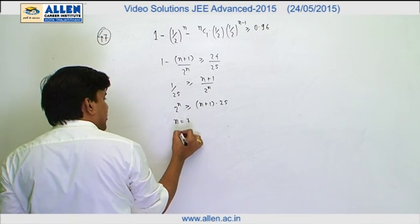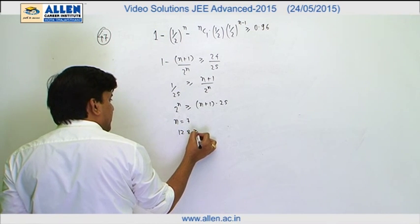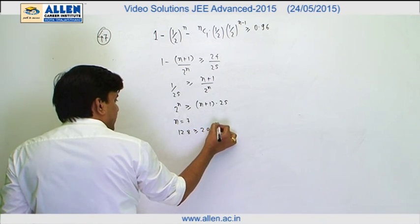If we put n equals 7, this side is going to be 128 and this side is going to be 200. This is of course false.